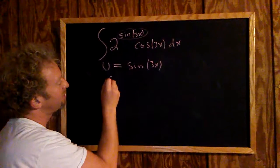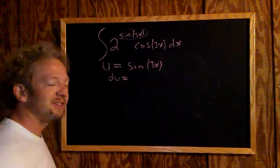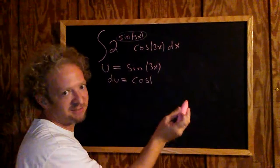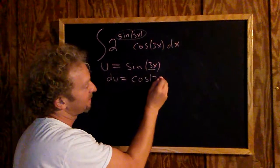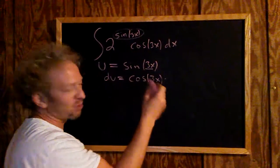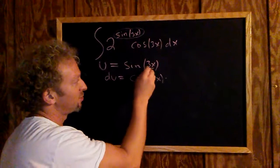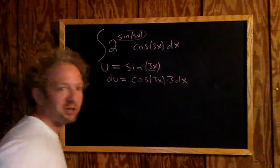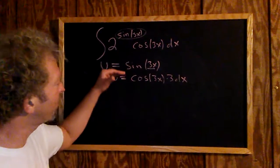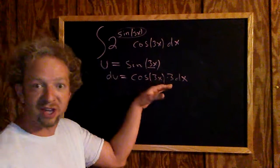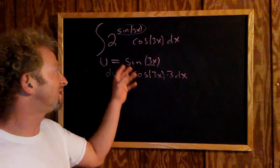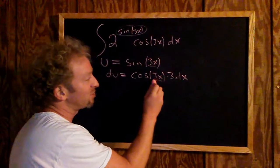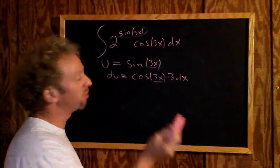When you compute du, the derivative of sine is cosine, and then you don't touch the inside function. The inside function is 3x, and then you multiply by the derivative of the inside, which is the derivative of 3x, which is 3. So du equals cosine of 3x times 3 dx. The derivative of sine is cosine, but it's not just sine x, it's sine of 3x, so the derivative is cosine 3x times the derivative of the inside, which is 3. That's the chain rule.